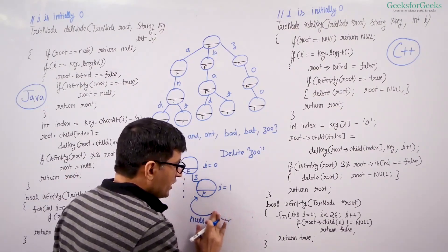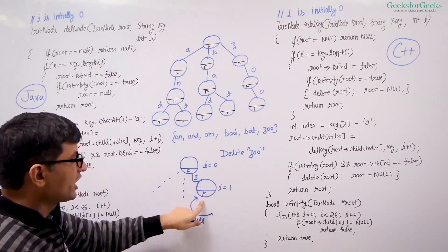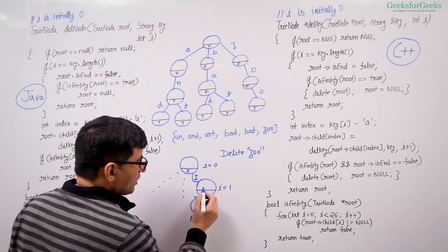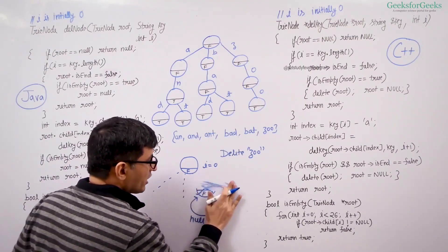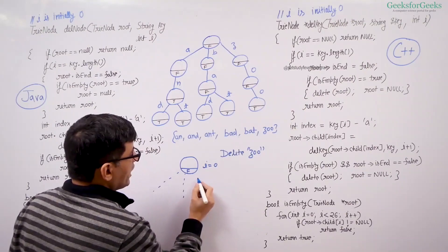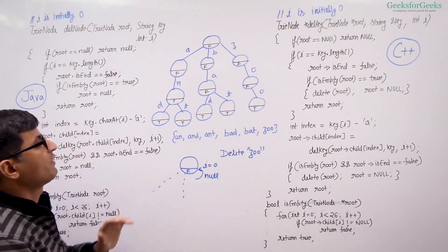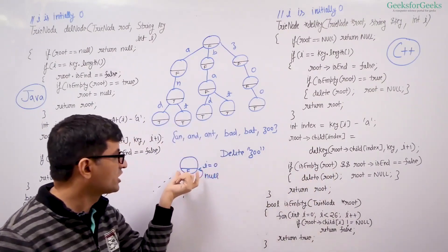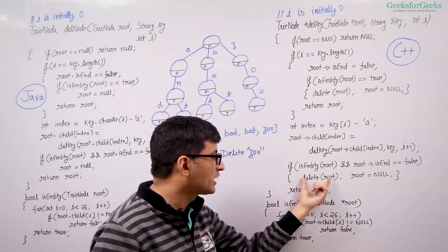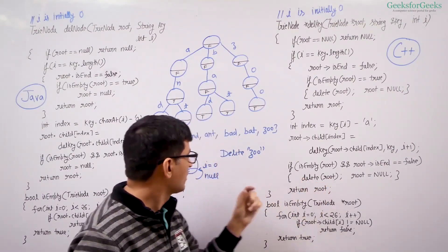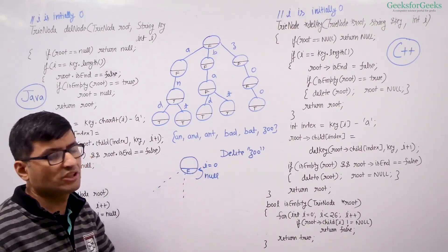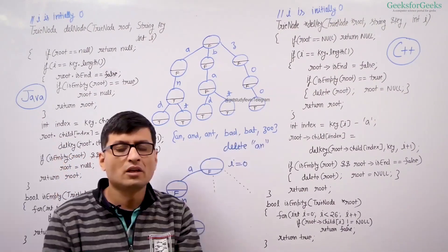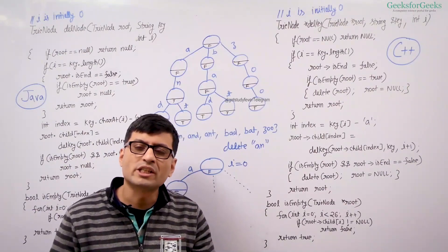Since that node now contains no child, it also goes inside the isEmpty condition, deletes itself, and returns null to the parent. Control comes back to the main root. The main root checks if it is empty — it is not empty, it has two more children — so it does not delete itself; it simply returns the root of the trie. Deletion is complete: zoo is no longer part of this trie; only those two remaining children are there.